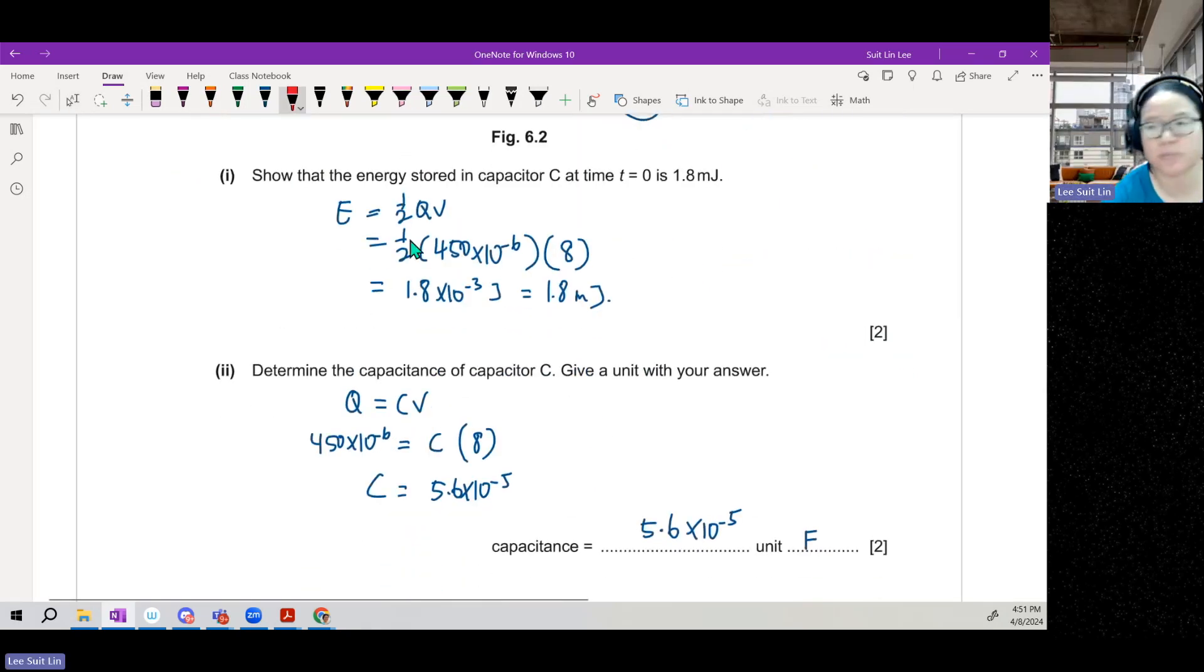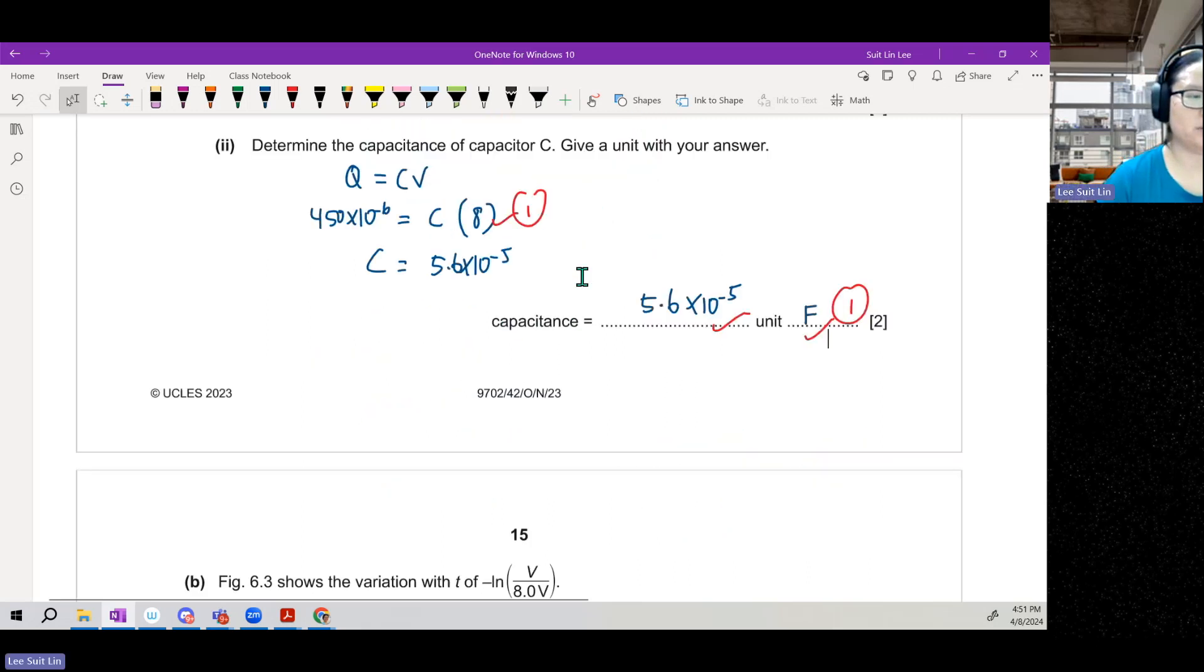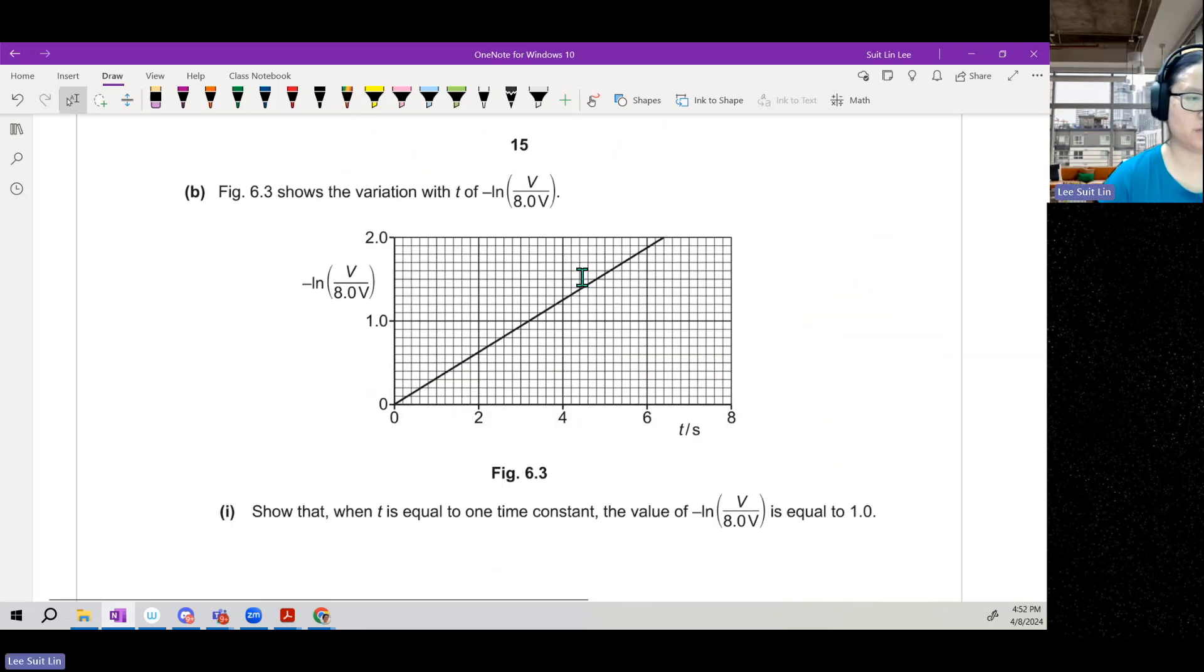So the marks here would be write the equation or use area under the graph, one mark, substitution one mark. The second one would be this substitution one mark, final answer including the unit one mark. Or write part B. Oh, look at this spicy graph.